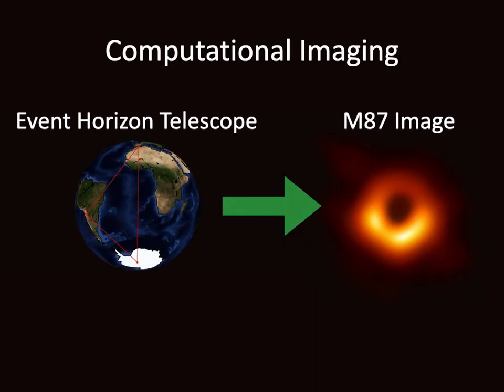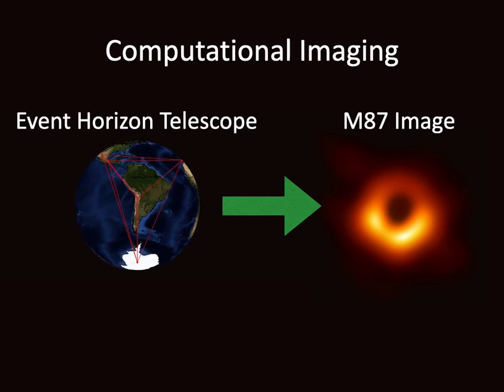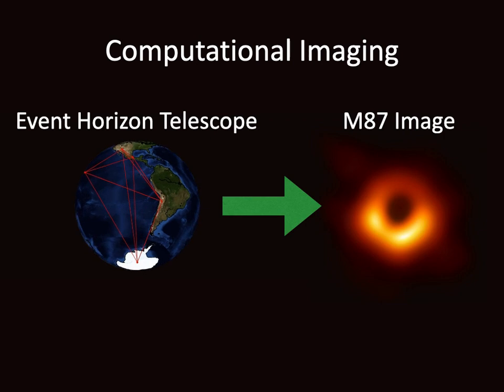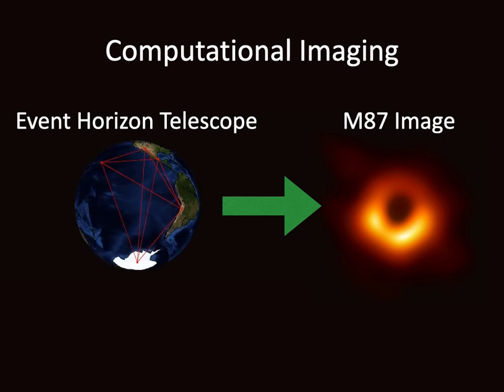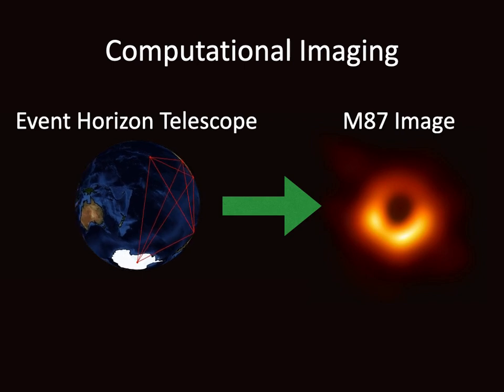This image was computationally constructed from measurements of synchronized telescopes collected over the course of an entire night. Key to this result is the underlying assumption that M87 is static during acquisition.